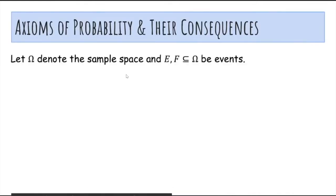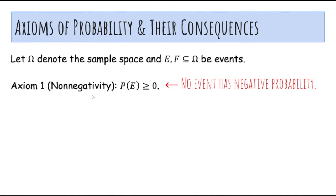So now let's cover the axioms of probability. So if omega is a sample space again, and E, F are events. So the first axiom is just that the probability of any event has to be at least 0, so no event can have negative probability.